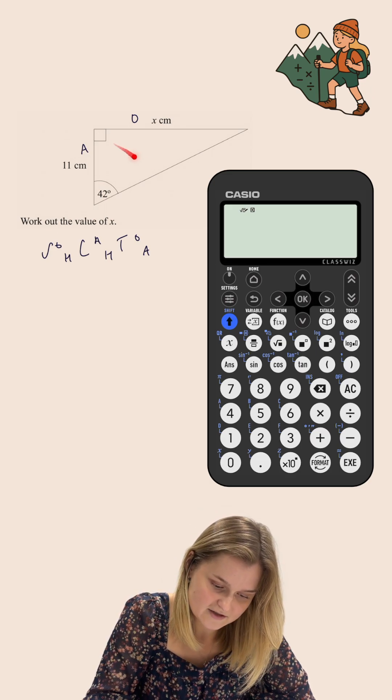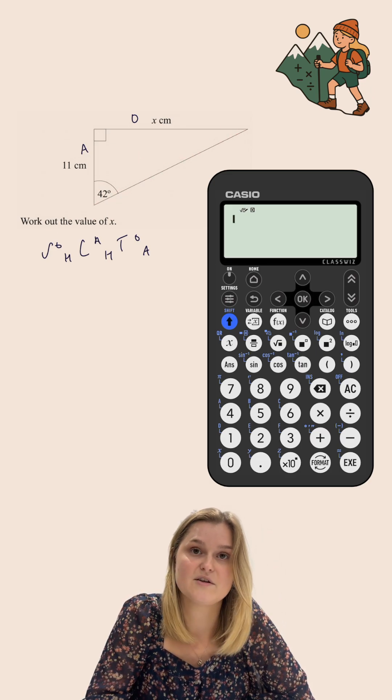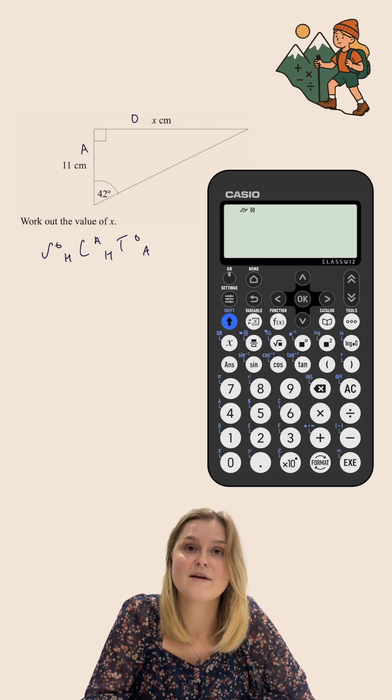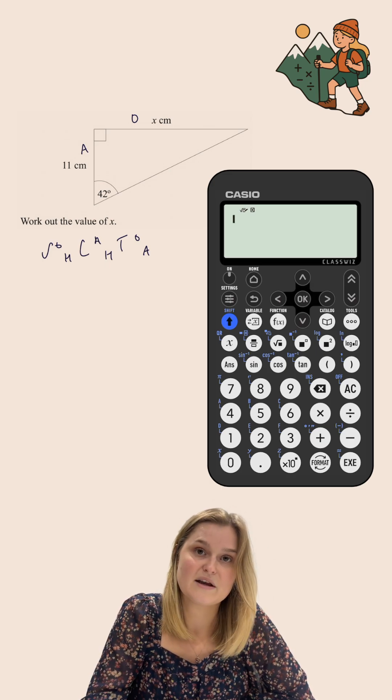This side here, opposite to the right angle, is known as the hypotenuse. But we haven't been given any information about that one so I'm just going to ignore that one for now.